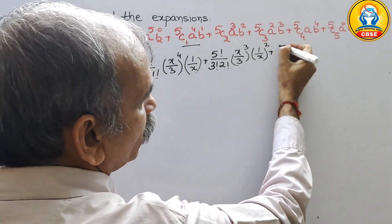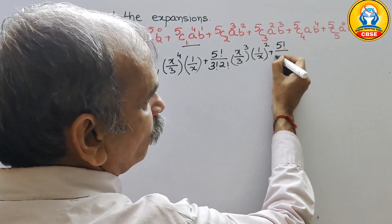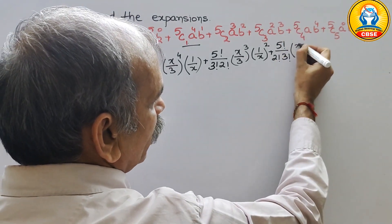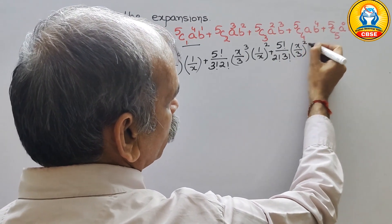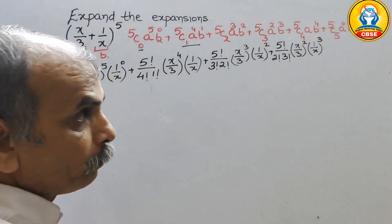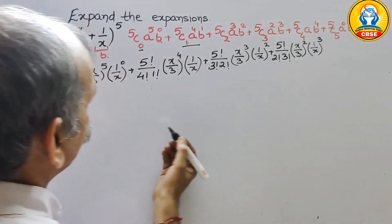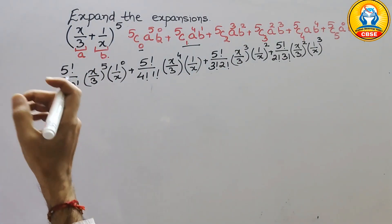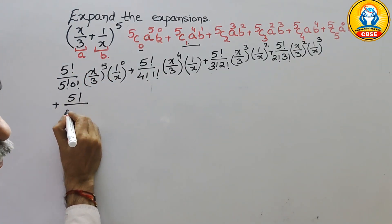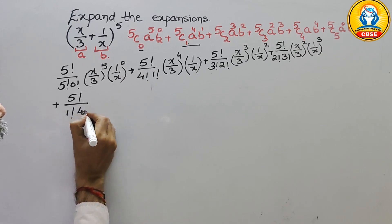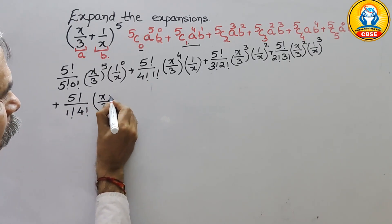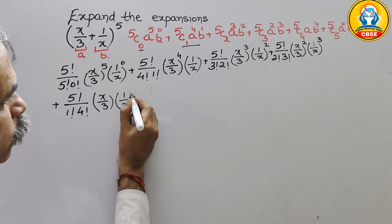So we write 5 factorial divided by 2 factorial times 3 factorial, times a squared which is (x/3) squared, times b cubed which is (1/x) cubed. Plus 5C4, which is 5 factorial divided by 1 factorial times 4 factorial, times a which is x/3, times b to the power of 4 which is (1/x) to the power of 4.